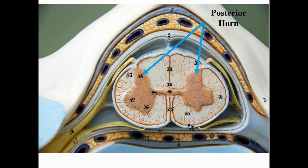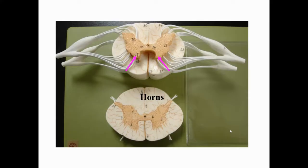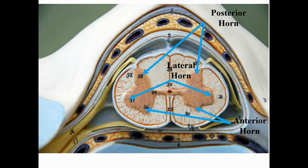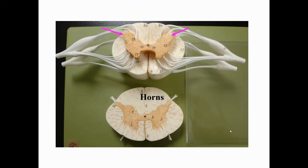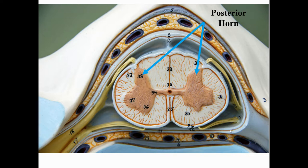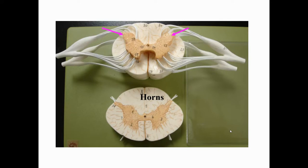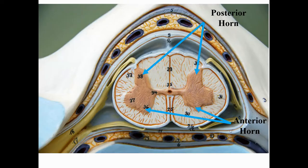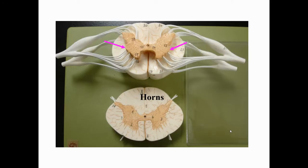There's gray matter in the middle of the spinal cord shaped like a butterfly, but instead of wings this butterfly has horns — three pairs. We have the posterior horns on the posterior side, the anterior horns on the anterior side, and the lateral horns projecting outward to the sides. The posterior horns are pointy and go all the way to the surface — another way to tell anterior from posterior. The anterior horns are rounded and don't reach the surface. The lateral horns project out to the side.